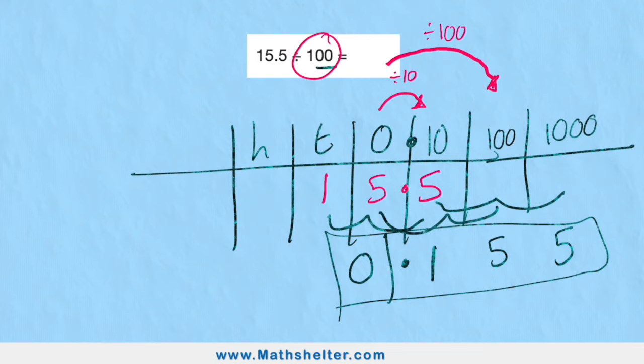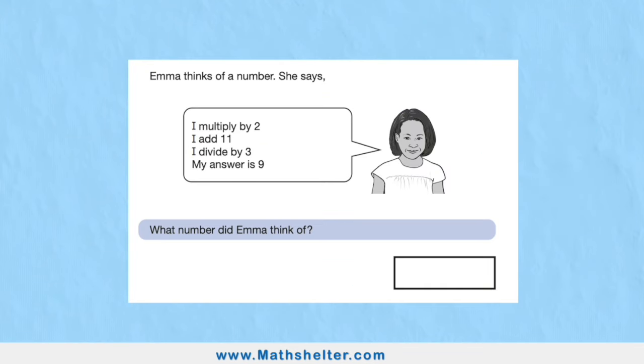Question four: Emma thinks of a number. She says I multiply my number by two, I then add eleven, I divide by three, and my answer is nine. Her number she multiplied by two, she divided by three, and her answer equaled nine. Because we've got our missing value in the question, we need to put this towards the end, so we're going to be doing the inverse.